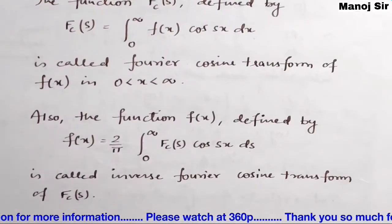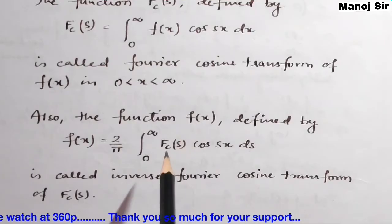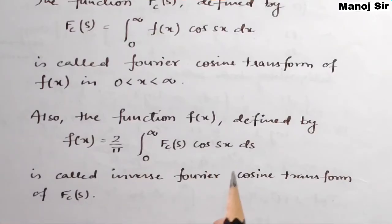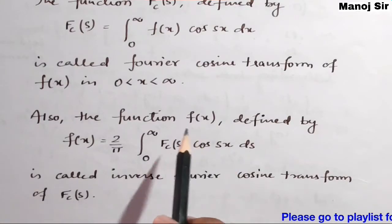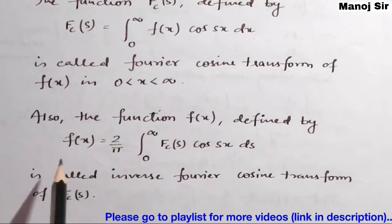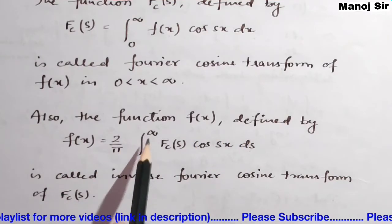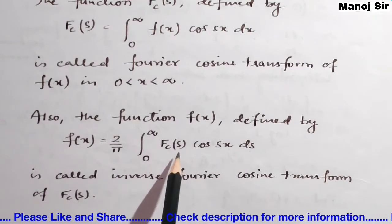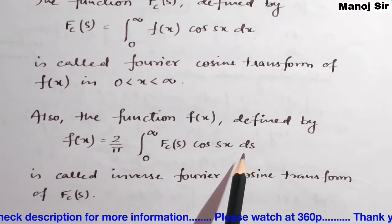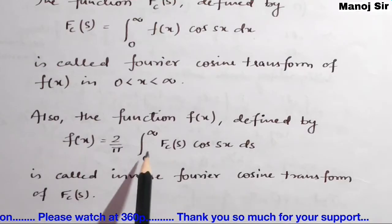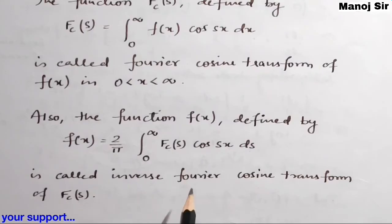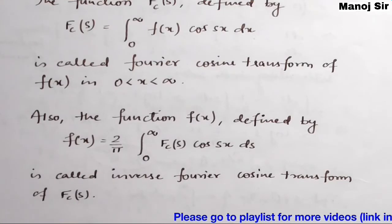Now, if the reverse is given — that is, the Fourier cosine transform is given and you want to find f of x — then f(x) is defined by: f(x) = (2/π) integration from 0 to infinity of fc(s) cos(sx) ds. Using this formula we can find f of x, and this part is called the inverse Fourier cosine transform of fc(s).